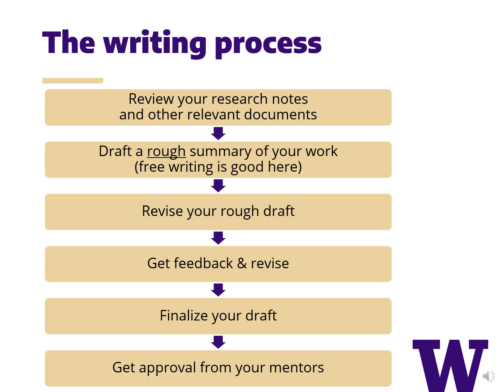Here we outline steps you can take to streamline writing your abstract. First, review your research notes and other relevant documents. Second, draft a summary of your work — in many cases, free writing can be helpful. Don't worry about grammar or spelling in the first draft. Third, go back and revise your rough draft; writing is strengthened by frequent revising and you may want to do this several times. Fourth, get feedback from your colleagues and friends and then revise again. After lots of feedback and revisions, create a final draft and send it to your mentor for final approval.